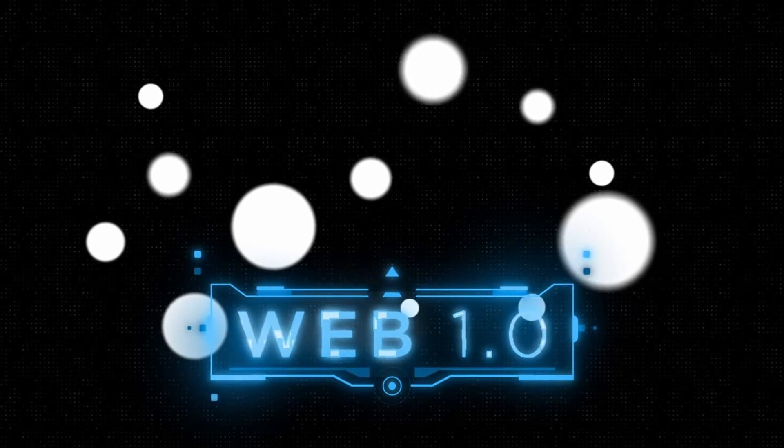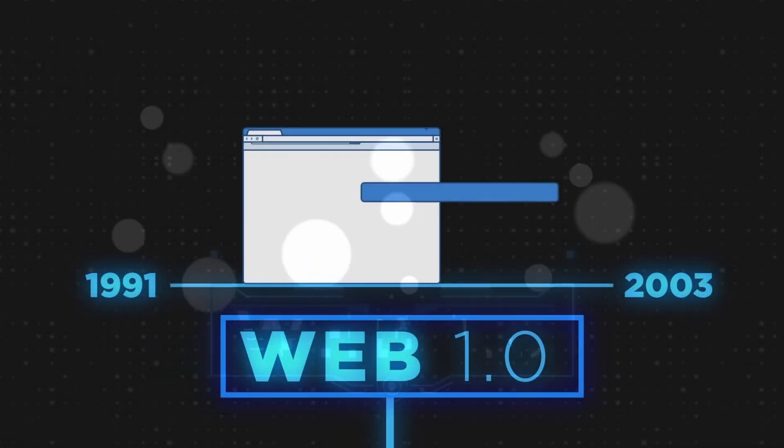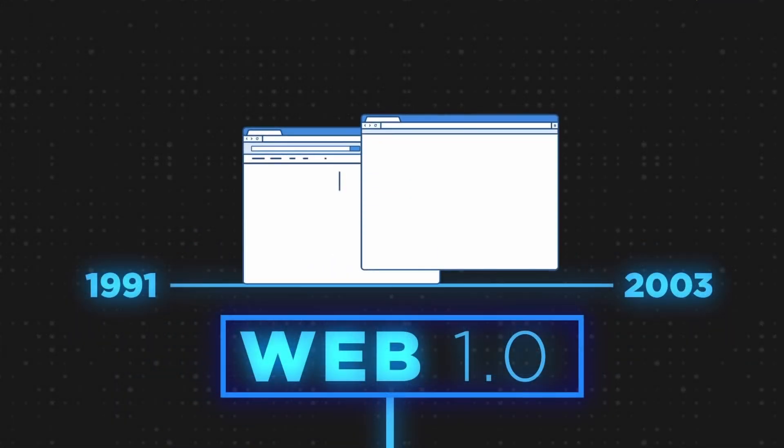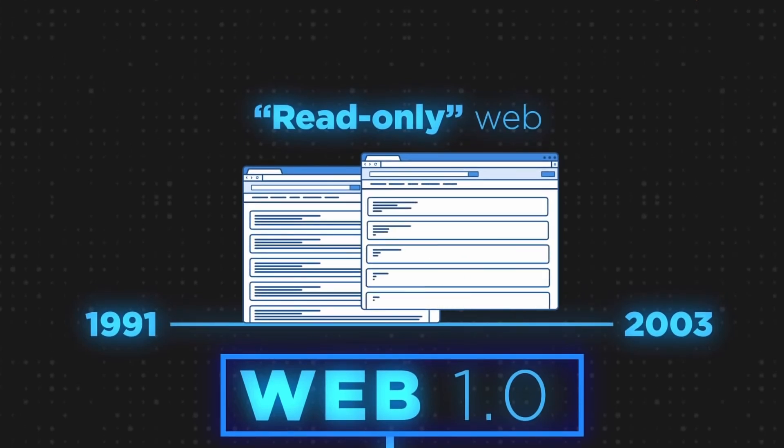Web1. Web1 Internet consists of web pages, and it is one of the early parts of the data series. The main purpose is defined by Web1.